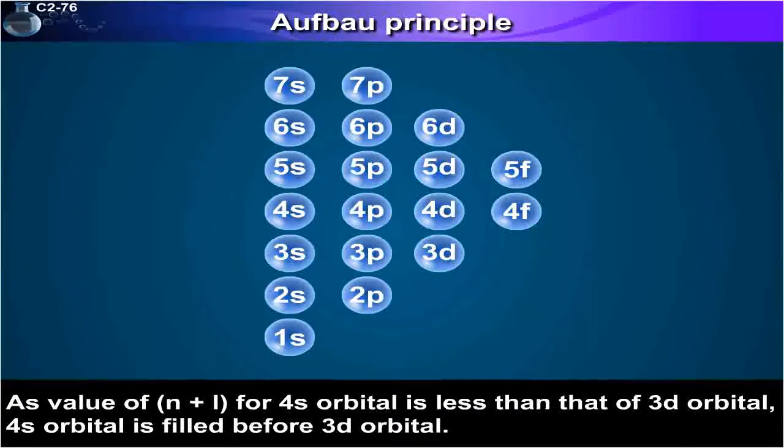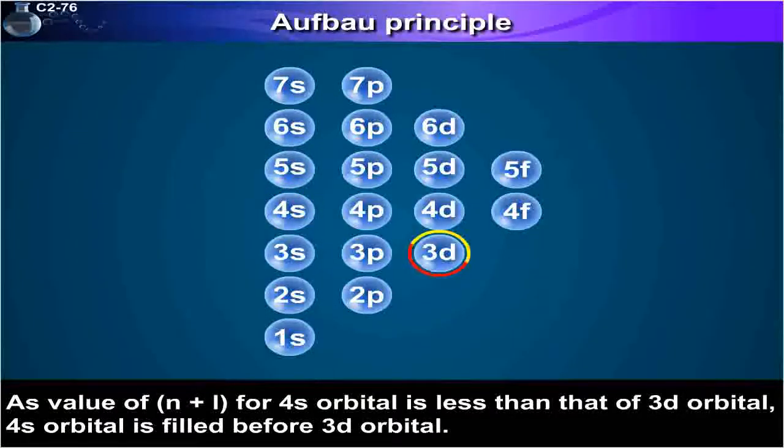As value of n plus l for 4s orbital is less than that of 3d orbital, 4s orbital is filled before 3d orbital.